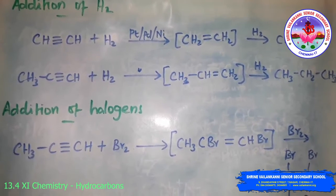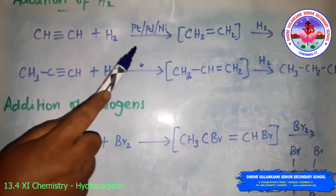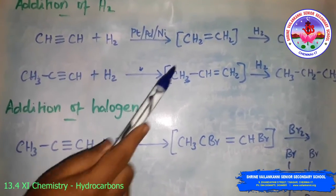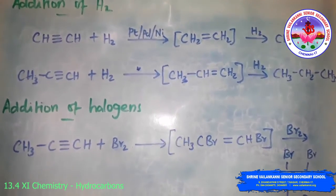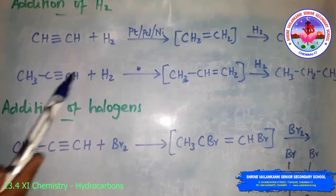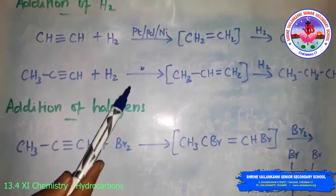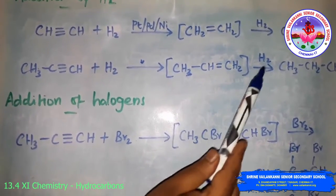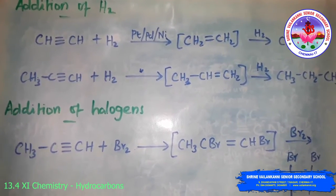Addition of dihydrogen: the addition of dihydrogen to ethyne in the presence of platinum, palladium, or nickel catalyst forms ethene. Alkyne converts to alkene. Further addition of hydrogen gives the alkane — for example, propyne to propane.